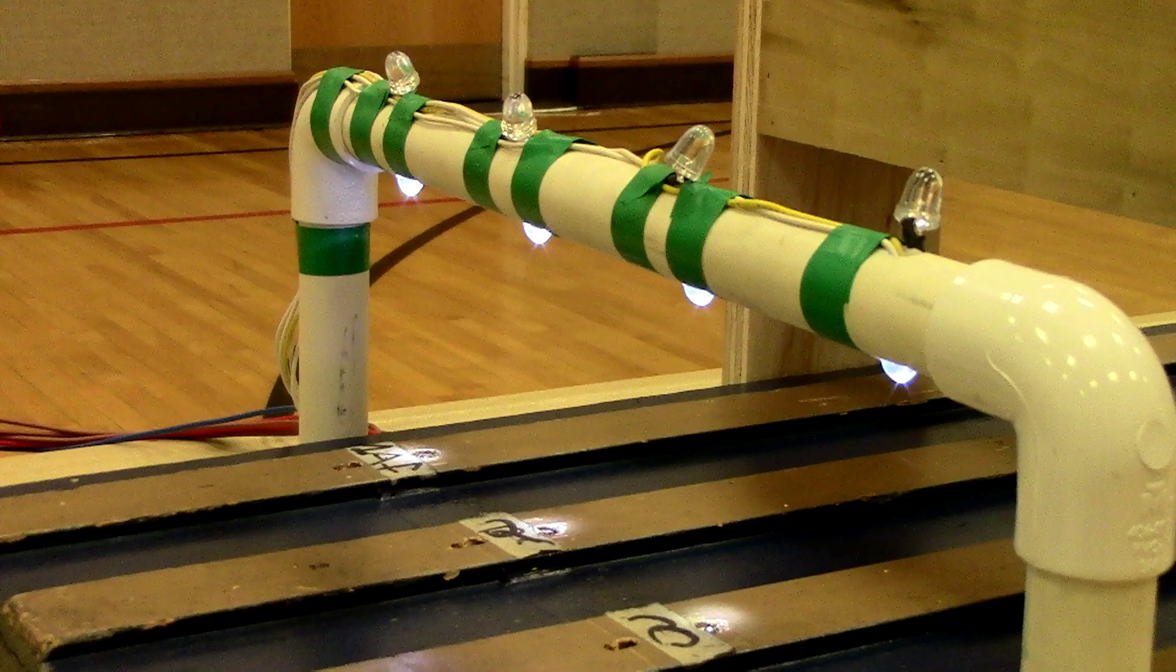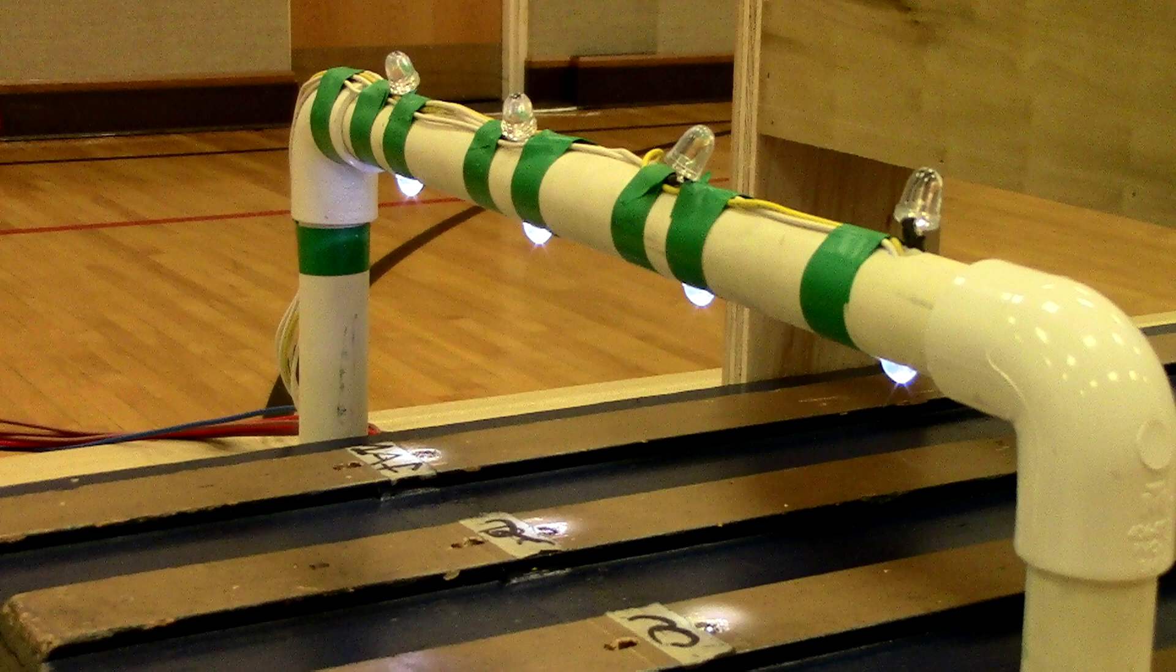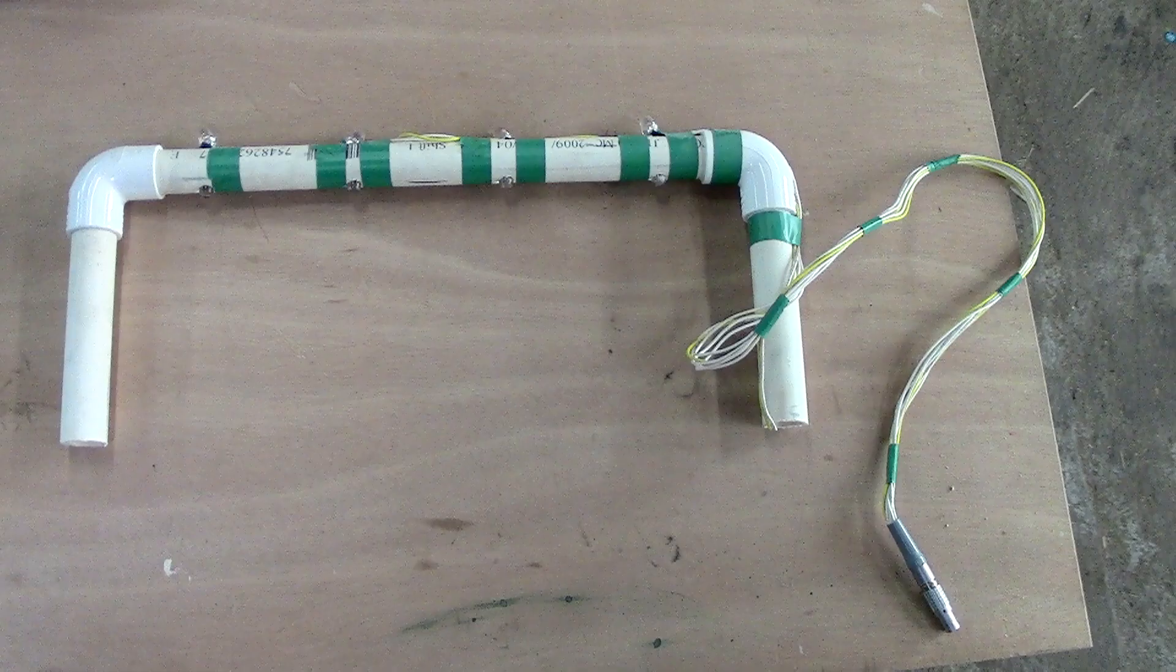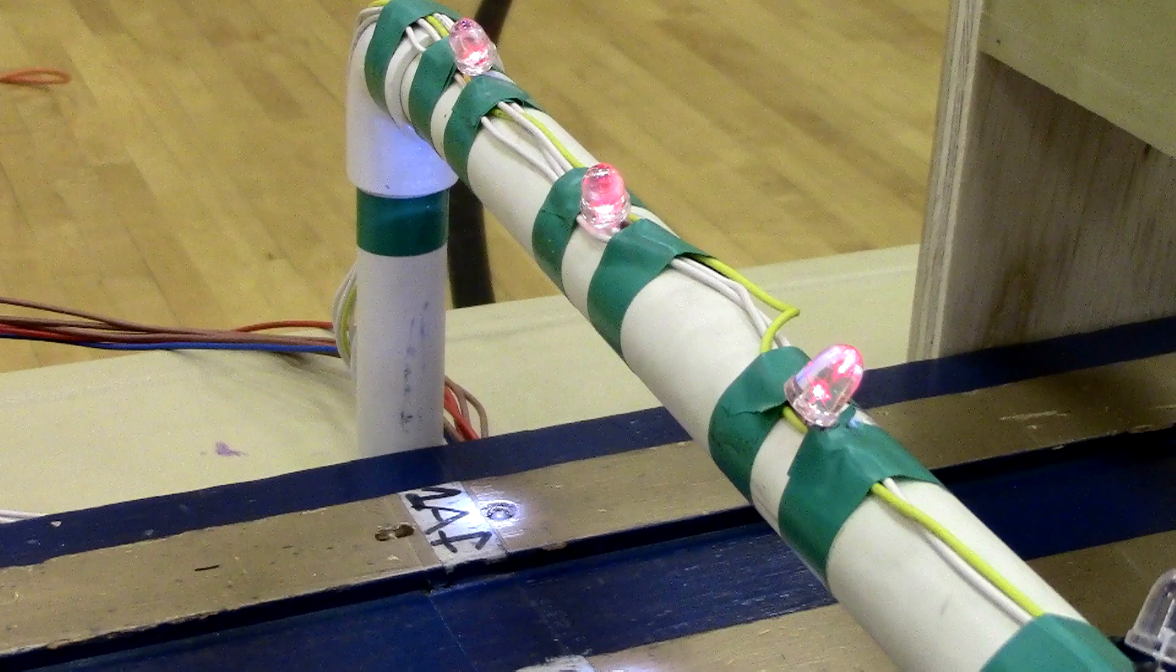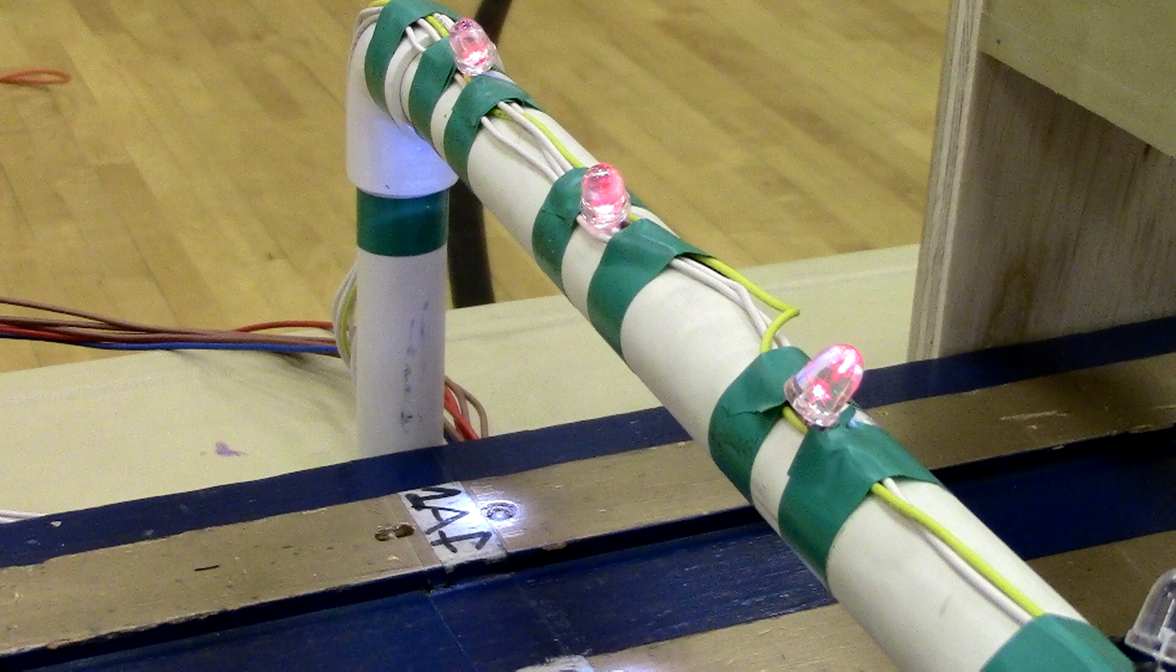A couple years ago, I was asked to help out a local scout troop by building a Pinewood Derby track timer system. I used some PVC pipe to make a gantry to go over the lanes, using some bright LEDs to shine down on photo transistor sensors and some red LEDs on top to actually indicate who won and in what order.